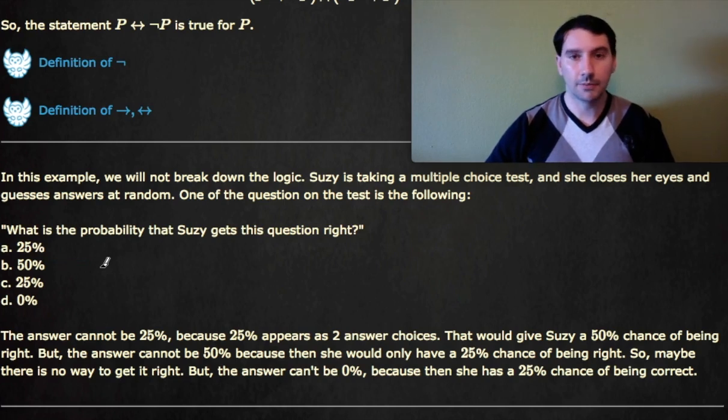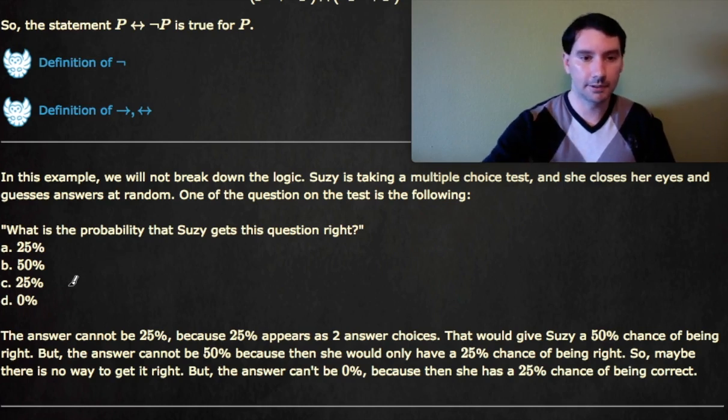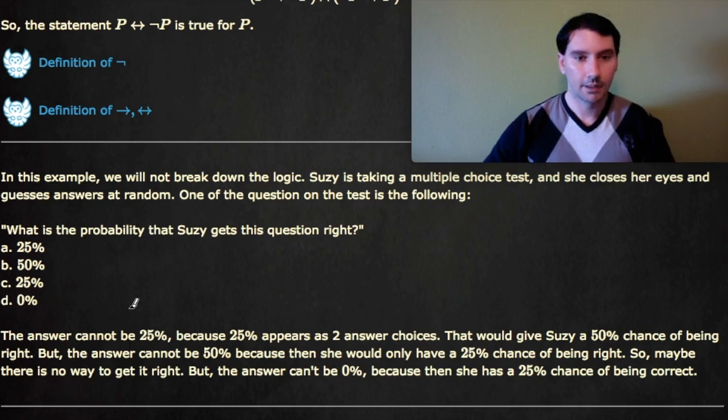Okay, so it can't be 25%, and it can't be 50%, and so none of the answers really make sense, but that would mean that there's a 0% chance that she gets it right. However, it can't even be 0%, because D is 0%, and then there's a 25% chance that she's right. So, since it can't be 25, or 50, or 0, what's the answer?